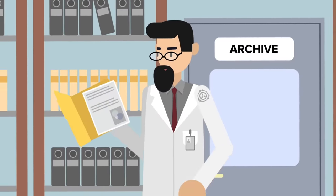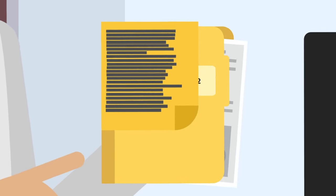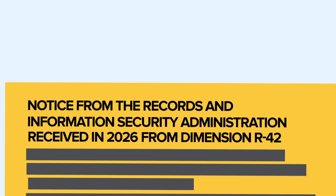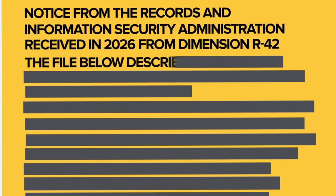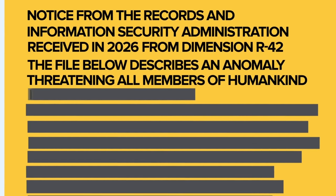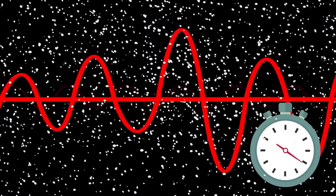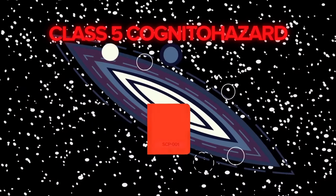The file begins somewhat different from what we're used to with SCP Foundation files. Instead of an item number or containment procedures, we begin with a yellow notice from the Records and Information Security Administration, or RACA for short. The notice states that the following file was received in 2026 from Dimension R-42. Is Dimension R-42 potentially the cause of SCP-001? Could they be attacking this version of the SCP Foundation? The notice continues with the description of the file that follows it. It states, the file below describes an anomaly threatening all members of humankind in all of the multiverse. This file had been admitted to this version of the SCP Foundation for eight minutes as an extremely dangerous cognitohazard, classified as a Class V cognitohazard capable of easily destabilizing and penetrating this universe.